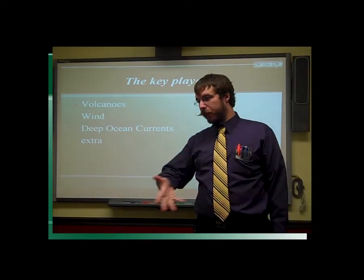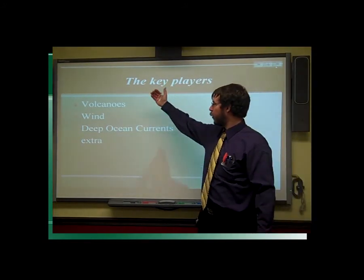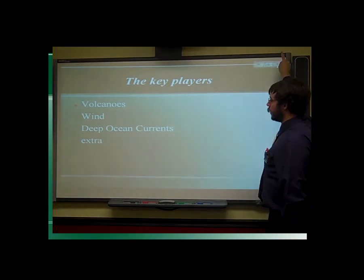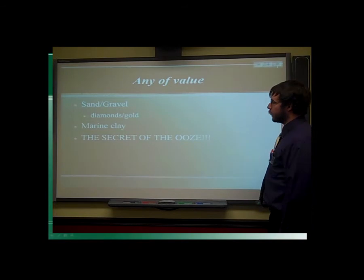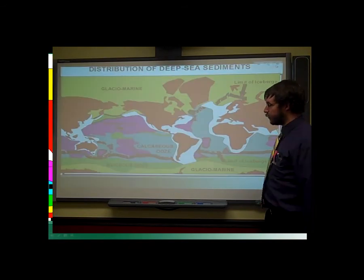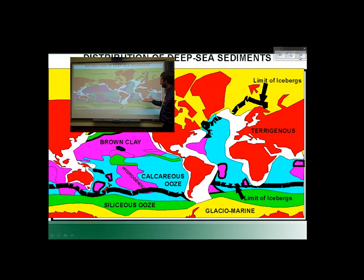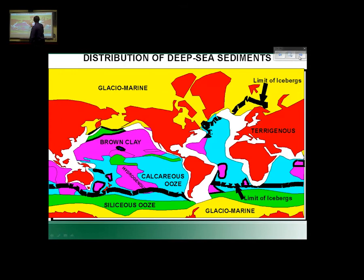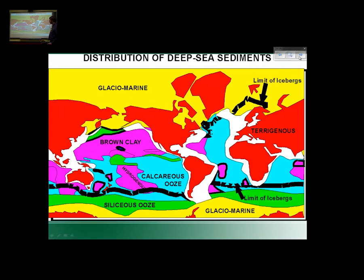Here are some of the key forces that are carrying the sediments for us — these are the erosional elements. You've got stuff coming out of volcanoes, stuff blown by the wind, and stuff carried by deep ocean currents. Volcanoes are a very interesting one because it gives us a good idea of different natural disasters. Now that we've talked about those things, looking at the map you can see — here's America, here's Eurasia, here's Africa — you can see there are big zones where we find different lithogenous sediments throughout the ocean, which is really cool.